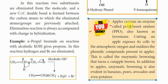A real-world example: an apple contains enzymes called polyphenol oxidase (PPO), also known as tyrosinase. When we cut an apple, it will turn from white to brown. In the atmosphere, oxygen causes the phenolic compounds in the apple to be oxidized, turning it brown. This process is called enzymatic browning — a natural example of oxidation.